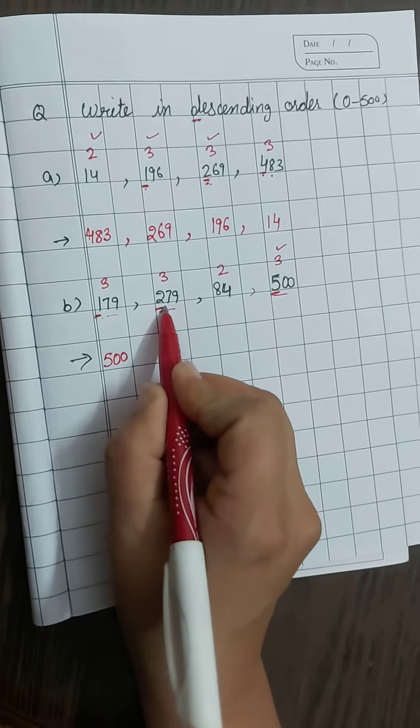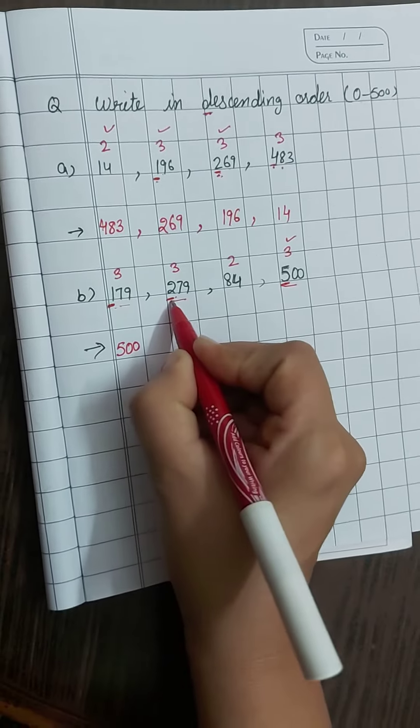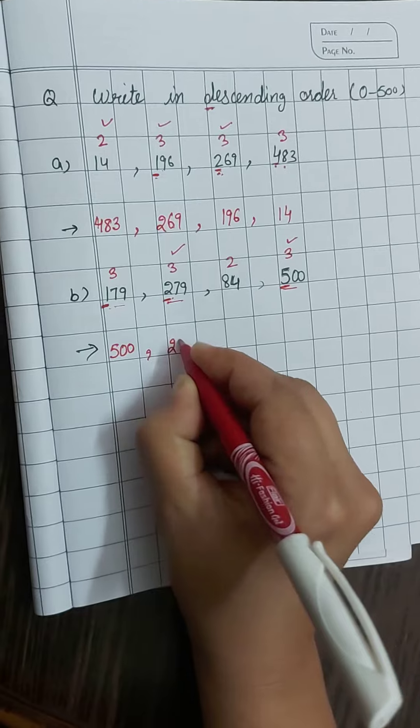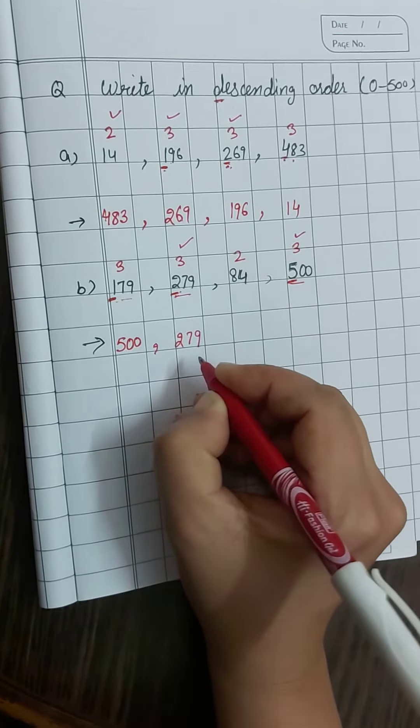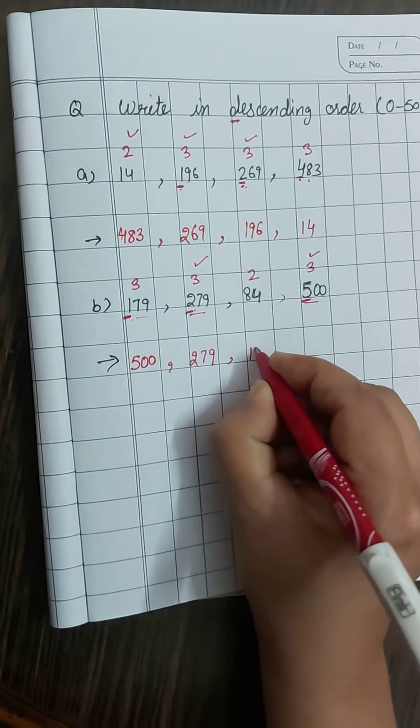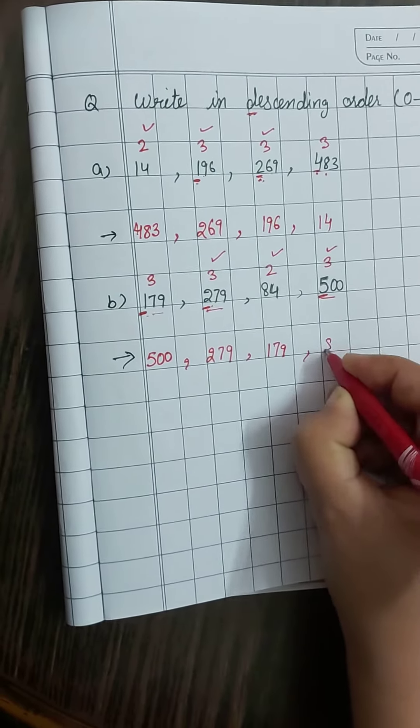Ab beta, in dono mein se hum check karte hain. Ismein hundred place pe one hai, ismein two hai. To two obviously bigger hoga, two hundred seventy nine, then one hundred seventy nine. Aur beta, end mein eighty four.